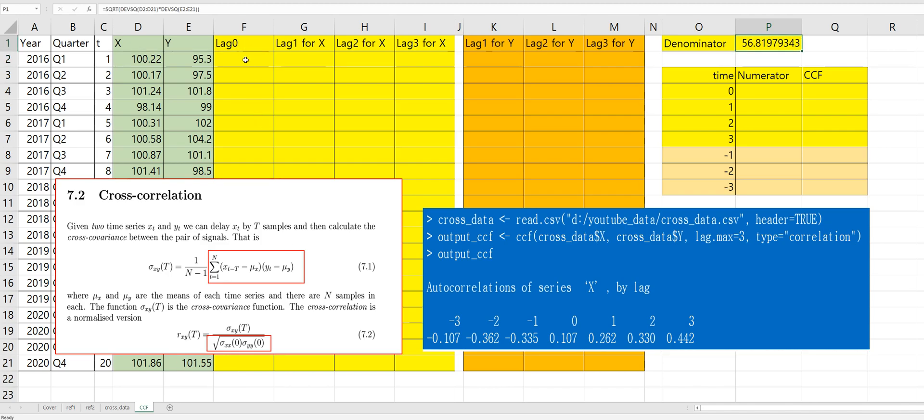Then, for lag 0, it means that we don't consider any lag. Let's get numerator part. So, I will summarize and sum all values here. So, in this cell, we need to calculate each observation's data value.